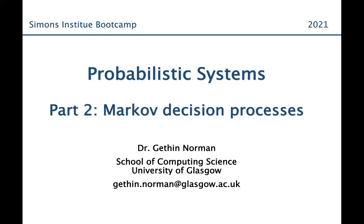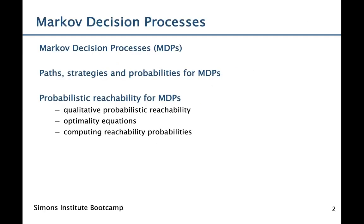I'll now move on to Markov Decision Processes, or MDPs. I'll first introduce what MDPs are and then define strategies and probabilities for MDPs. Then I'll talk about probabilistic reachability for MDPs, first considering qualitative probabilistic reachability — reaching with probability greater than zero or probability one — and then optimality equations, and finally how to actually compute reachability probabilities for MDPs.